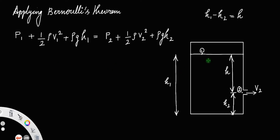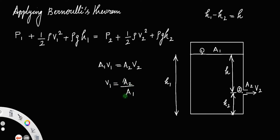Let a1 be the area of cross-section at region 1 and a2 be the area of cross-section of the hole. From the equation of continuity, a1 v1 = a2 v2, meaning area times velocity is constant. So v1 = (a2 / a1) times v2. Since a1 is very much greater than a2, this ratio approaches zero, which means v1 equals 0.